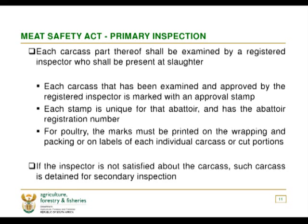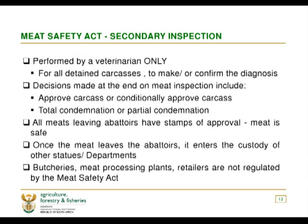If the inspector is not satisfied about the carcass, such carcass is detained for secondary meat inspection. Secondary meat inspection is performed only by a veterinarian, for all detained carcasses to make or confirm the diagnosis. The decisions made at the end of meat inspection include: approved carcass, conditionally approved carcass, total condemnation, or partial condemnation — because there are diseases where you only need to condemn the organs, and diseases where you only cut out the affected part.